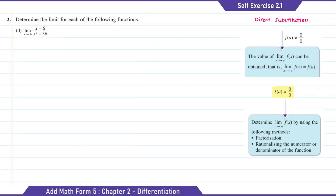This is Question D. We're going to substitute x with 6 as x approaches 6. This will be 6 minus 6 over 6 minus 36, and the answer is 0 over 0, which is indeterminate form.